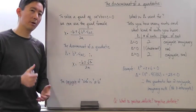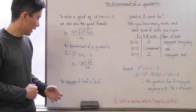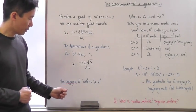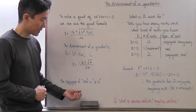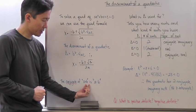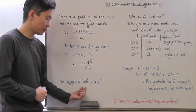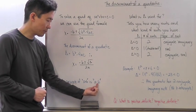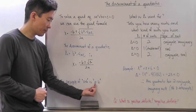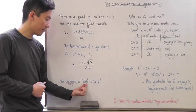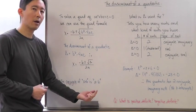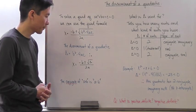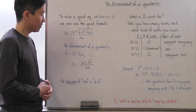Before we get to what the discriminant is used for, there's one piece of information you need to know: the conjugate. These two binomials here are conjugates of each other. The only difference between them is that the signs are different — one is plus and one is minus. So the conjugate of a + b is a - b, and the conjugate of a - b is a + b.